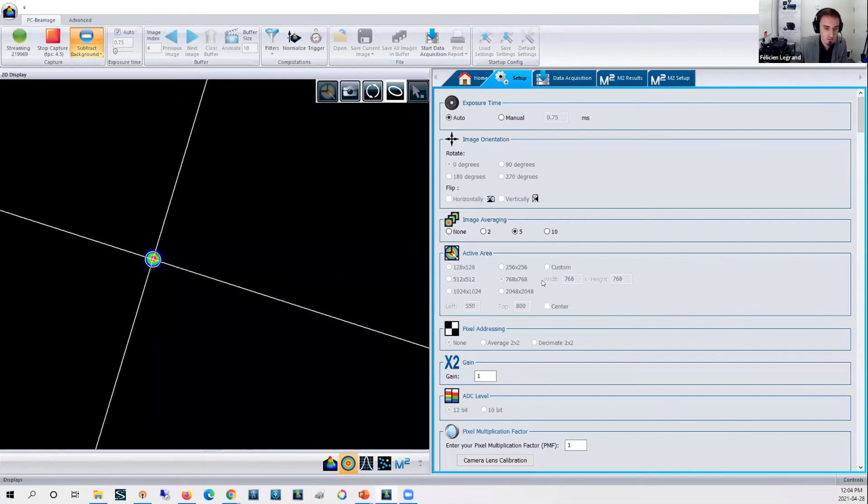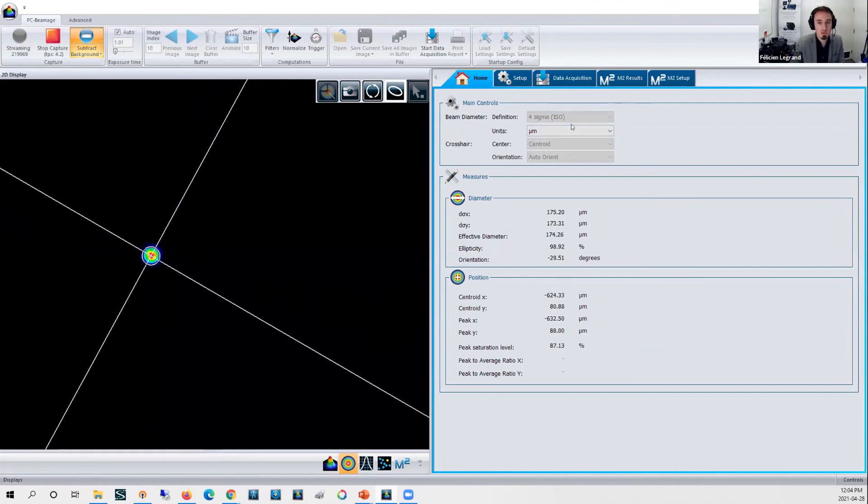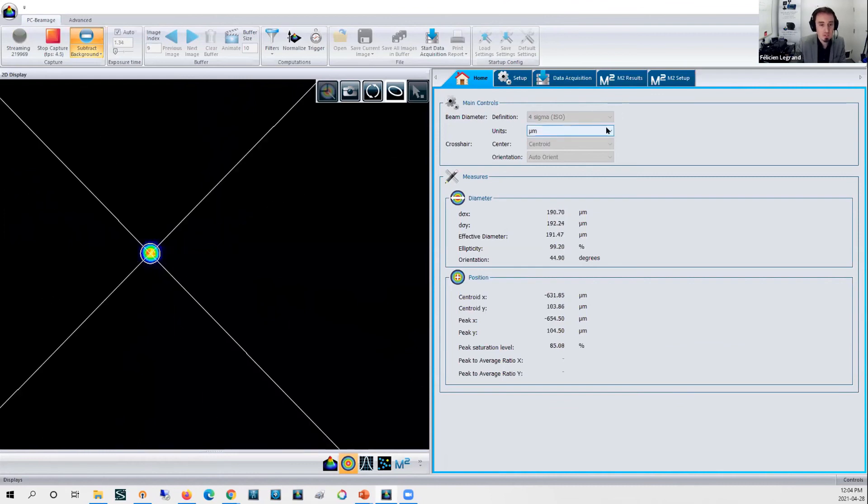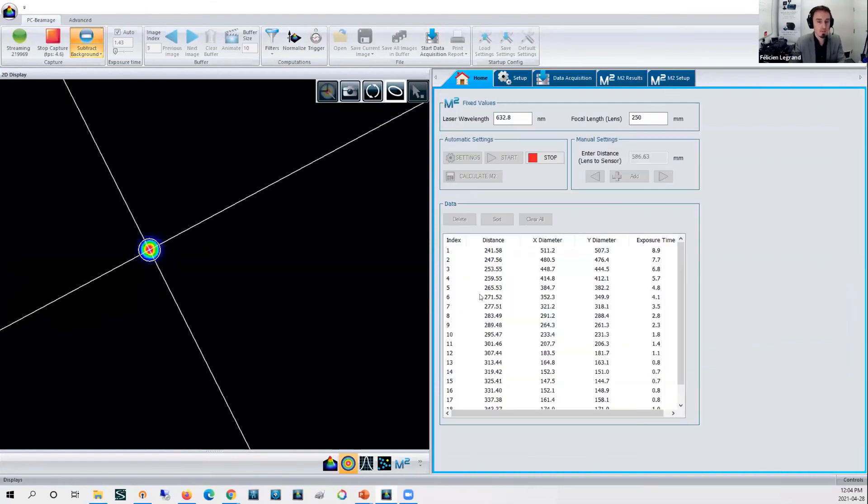But using a region of interest here, making the region smaller on the camera pixel area, that helps to get a little bit faster. I've selected this area here, pixel addressing not needed here and gain either. ADC level at 12 bit and so on. Home button here, we do provide four sigma ISO compliant measurement of the beam diameters. This is required to run accurate M² measurements. Units in micrometers, and you get a live measurement of those beam diameters here in X and Y, effective diameter, ellipticity, orientation and so on.